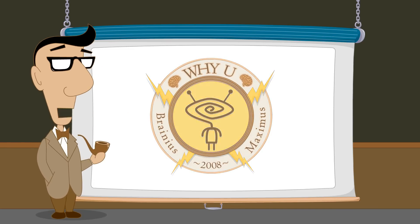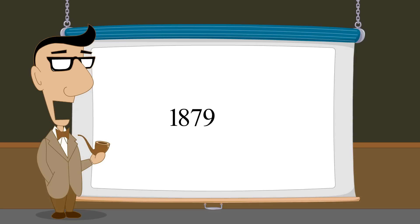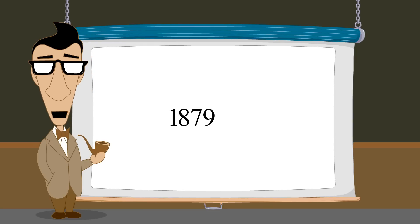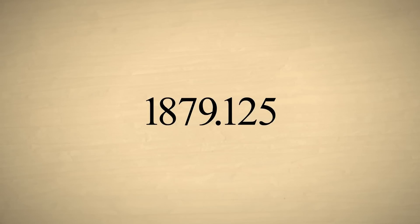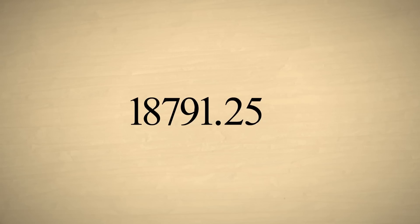In our lecture on the decimal number system, we saw that decimal numbers can represent fractional quantities by adding a decimal point to the right of the ones digit, followed by any number of digits. Multiplying a decimal number by ten, which can also be written as ten to the first power, increases the value of each digit by a factor of ten, shifting the digits one column to the left. Likewise, multiplying a decimal number by one tenth, which can also be written as ten to the negative first power, decreases the value of each digit by a factor of ten, shifting the digits one column to the right.